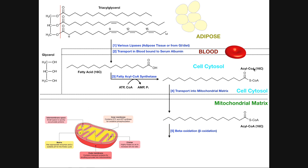Acyl CoA is a very general term — it doesn't tell us how many carbons it is. There are lots of acyl CoAs: we could have a 16-carbon acyl CoA, a 14-carbon acyl CoA, or an 18-carbon acyl CoA. So acyl CoA is very general; I'm specifying here how many carbons it has.